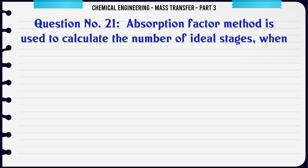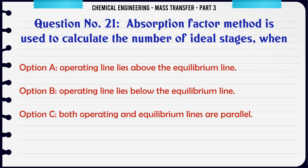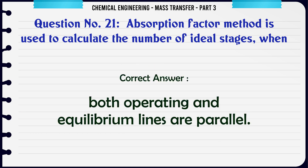The absorption factor method is used to calculate the number of ideal stages when: A) operating line lies above the equilibrium line, B) operating line lies below the equilibrium line, C) both operating and equilibrium lines are parallel, D) pressure drop in the column is very high. The correct answer is: both operating and equilibrium lines are parallel.